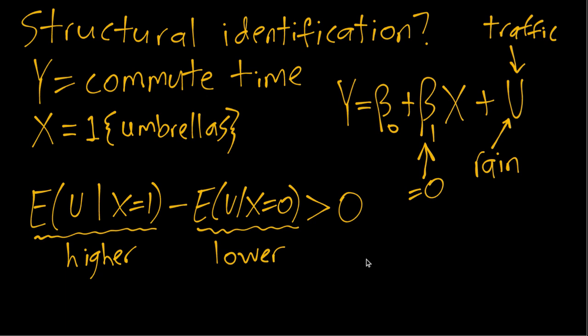So this violates the identifying assumption that we needed that would say these two things are equal to each other. So in this particular case this is the sense in which u and x are related. If we know the value of x that tells us something about the mean of u either being higher or lower.